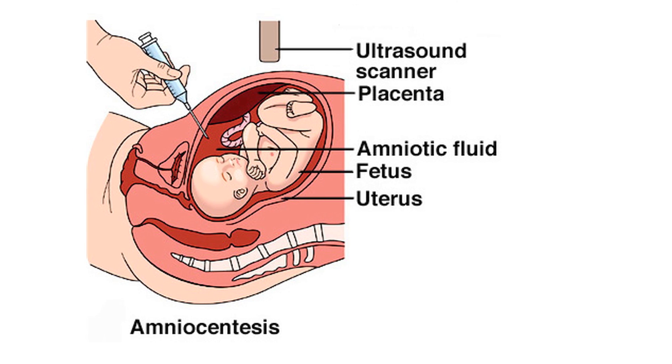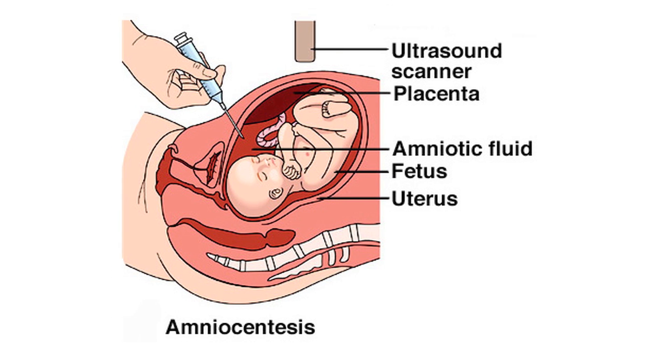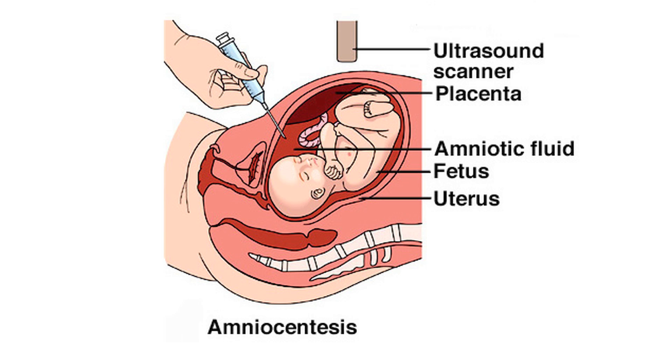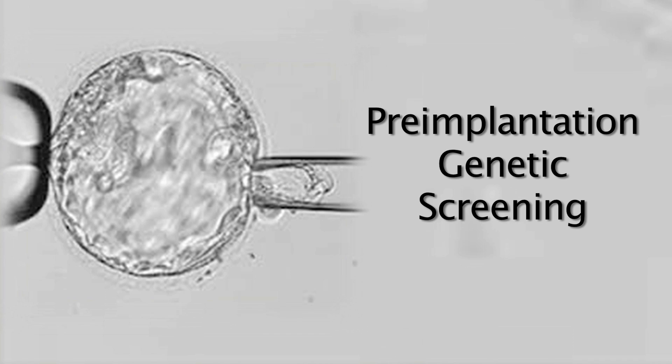These disorders can be screened for once you are pregnant with blood testing — the newest testing called NIPT — ultrasound testing, a combination of the two, or amniocentesis or CVS. These disorders can also be screened for if you do in vitro fertilization treatment by taking a few cells or biopsy from your embryos and doing genetic testing on those cells, called PGS, pre-implantation genetic screening or diagnosis.